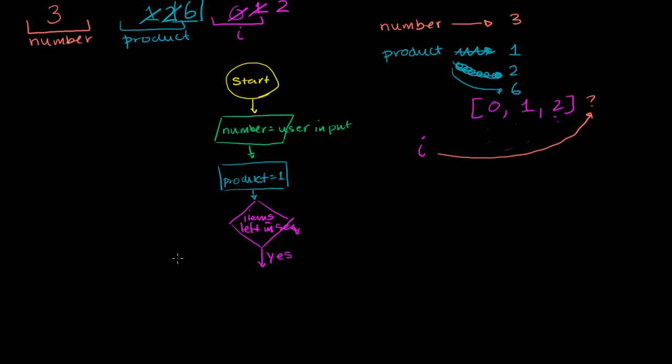If there are items in the sequence, then i is equal to the next item. That's one operation we do. And then we reset product, we reassign product to be equal to what the former value of product was times i plus 1.